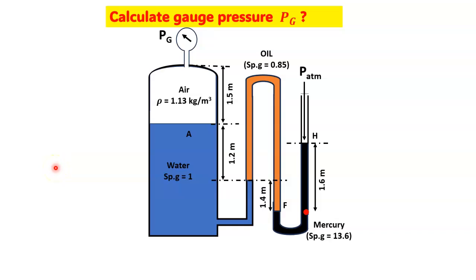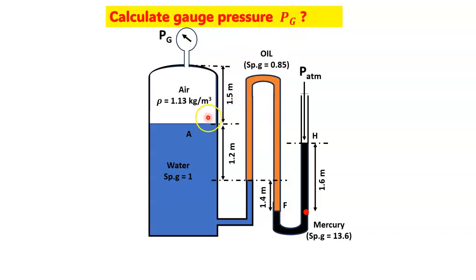Today I will talk about gauge pressure calculation for a multifluid manometer. Water in a tank is pressurized by air and the pressure is measured by a multifluid manometer as shown in the picture. We have to calculate the gauge pressure of the air in the tank.